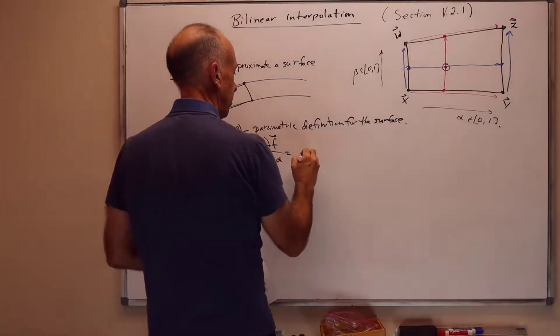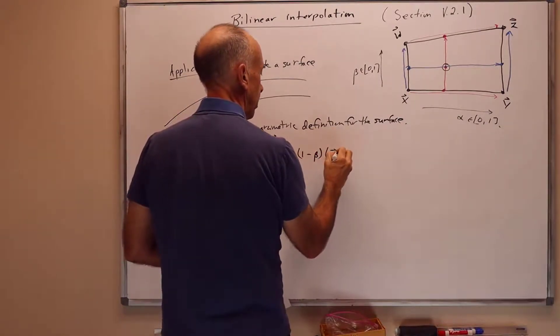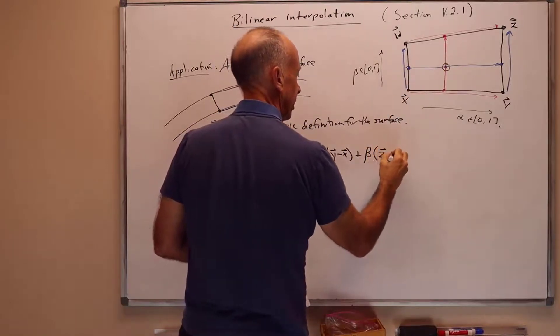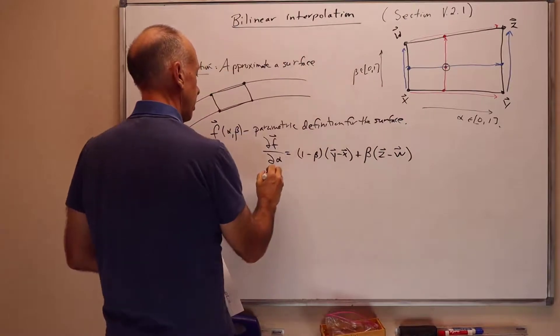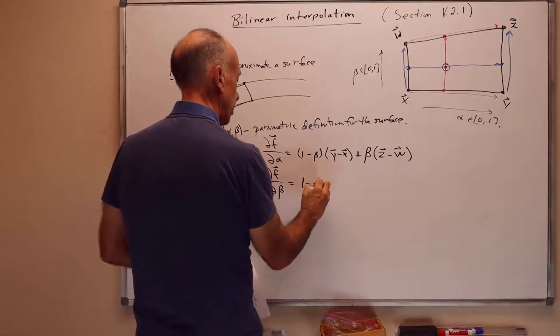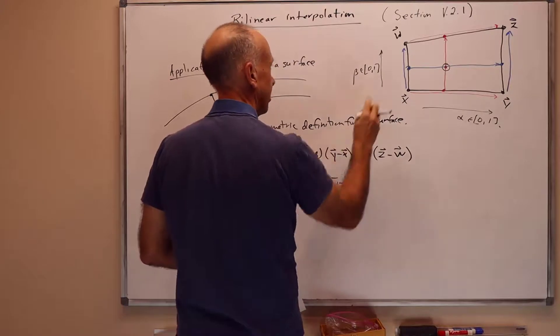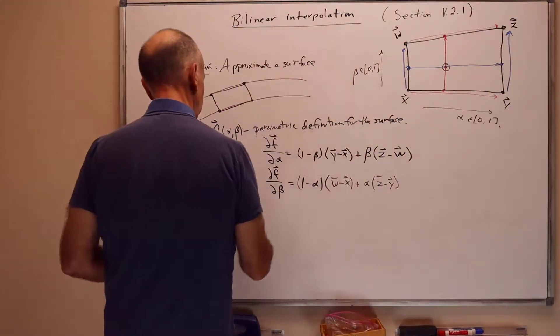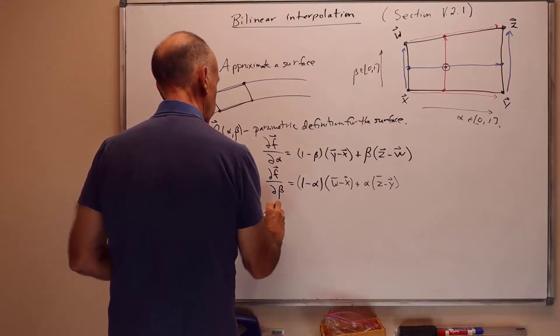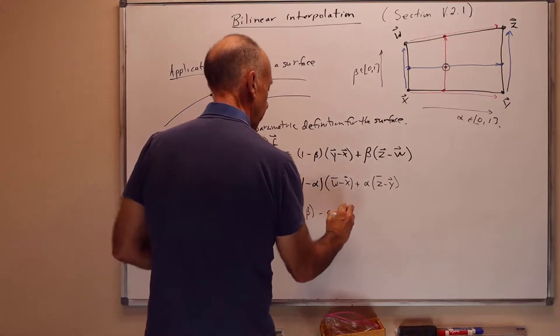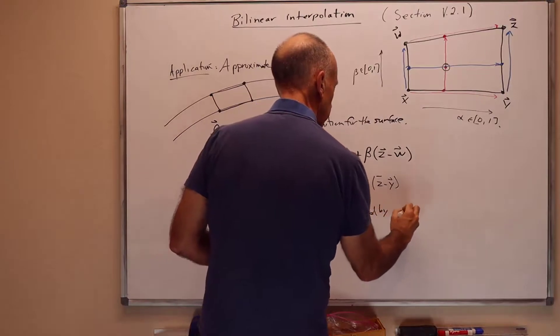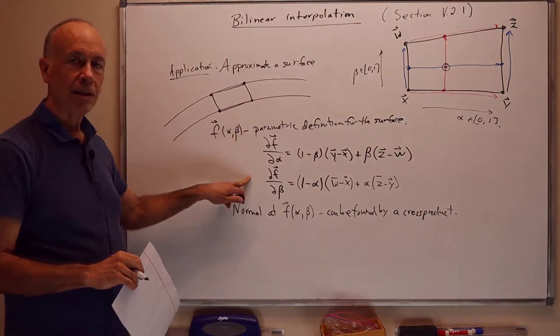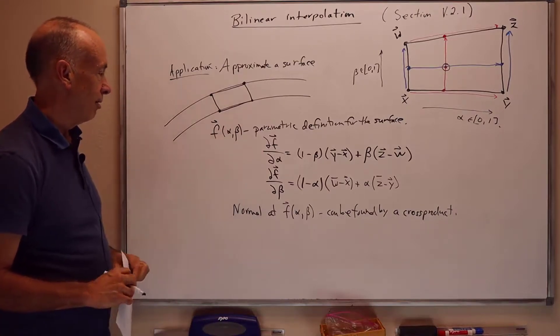But for the normals, we can use the cross-product method. It's easy to check that the partial of f with respect to alpha is 1 minus beta times y minus x plus beta times z minus w. So direct calculation gives this and the partial of f with respect to beta is 1 minus alpha times w minus x, that's the vector on the left side, plus alpha times z minus y. That's the vector on the right side. And then the normal to the surface at f of alpha beta can be found by cross-product. I won't do the calculations of these formulas in the presentation, but it's easy to do on your own. And there's an exercise in the book also that asks you to do it. So that's one application.